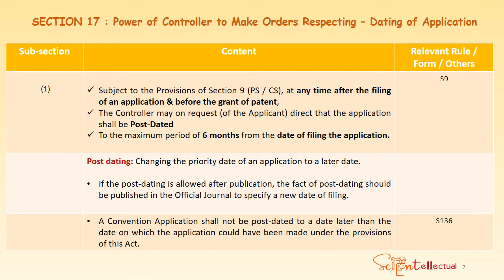Now let's come to Section 17: Power of Controller to make orders respecting dating of application. Subsection 1: Subject to the provisions of Section 9, at any time after filing the application and before the grant, the controller may, on request of the applicant, direct that the application shall be post-dated to a maximum period of 6 months from the date of filing of the application. If the applicant requests the controller to post-date — cancelling the original date and moving it to a later date — then the controller may do so.